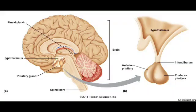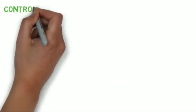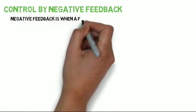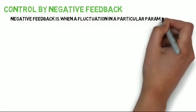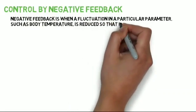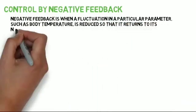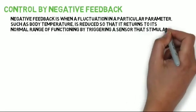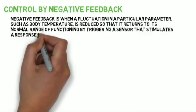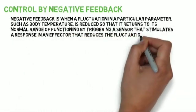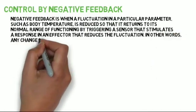Control by negative feedback. Negative feedback is when a fluctuation in a particular parameter, such as body temperature, is reduced so that it returns to its normal range of functioning, by triggering a sensor that stimulates a response in an effector that reduces the fluctuation. In other words, any change is counteracted so that it returns to its set point.